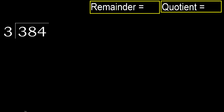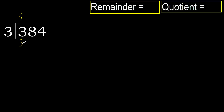384 divided by 3. 3 is not less, therefore work with 3. 3 multiplied by which number is nearest to 3 but not greater? 3 multiplied by 2 is 6 — 6 is greater. Multiplied by 1: 3 is not greater. Ok, subtract. Next, eliminate the 0 on this side.